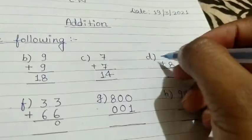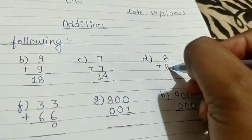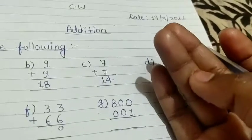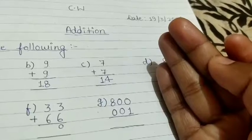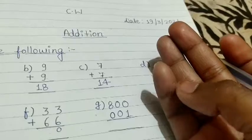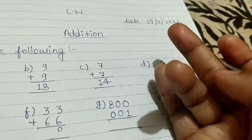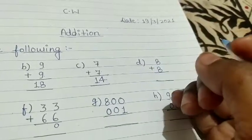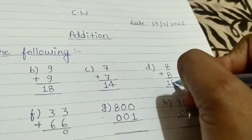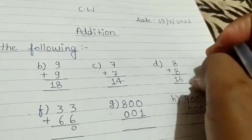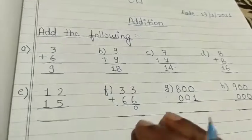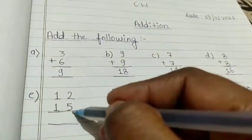Now come to problem d: eight plus eight. Count it — one, two, three, four, five, six, seven, eight. Add eight more: nine, ten, eleven, twelve, thirteen, fourteen, fifteen, sixteen. So eight plus eight equals 16. Write the answer here: 16.